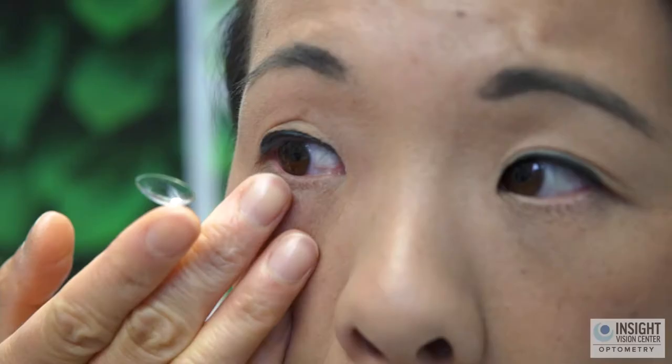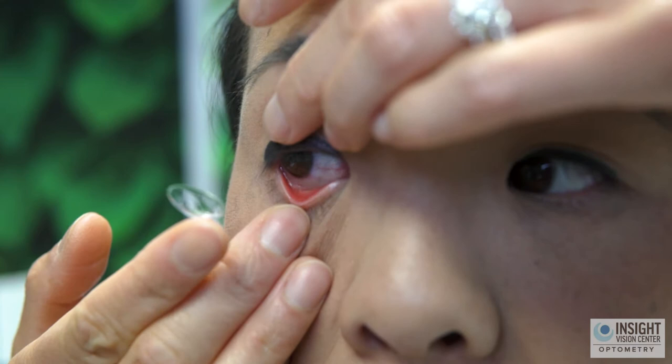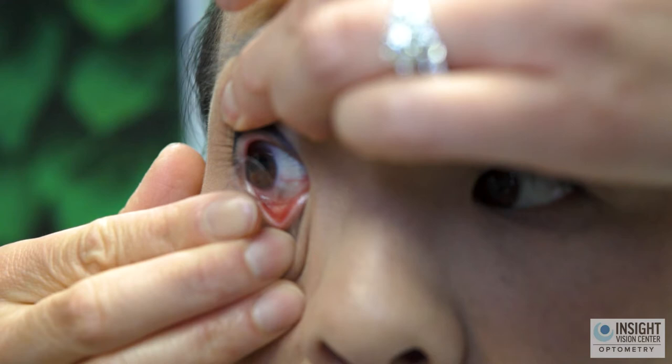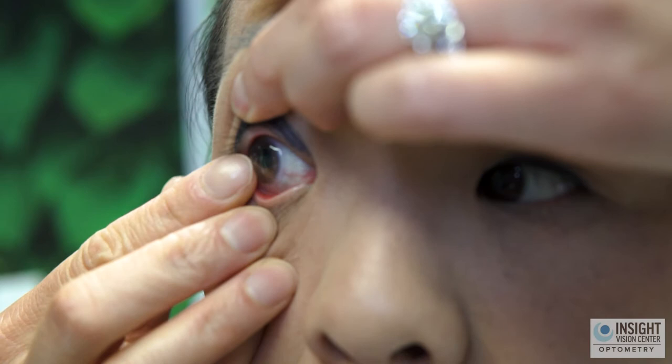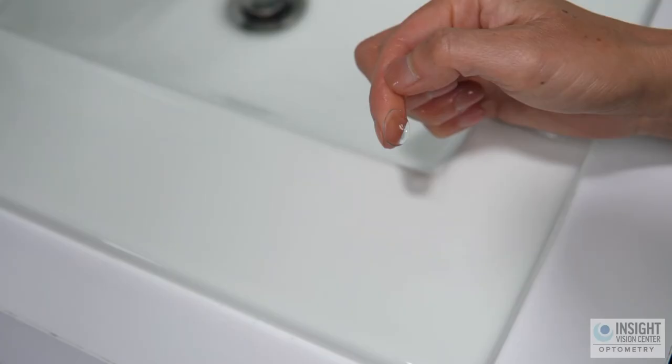Step 7: Look into the mirror. Use your other hand to gently lift your upper eyelid. Use the remaining fingers of the dominant hand to pull down on the lower eyelid. Step 8: Gently place the contact lens on the center of the eye. Look around for a few seconds to allow the lens to settle. Blink slowly.